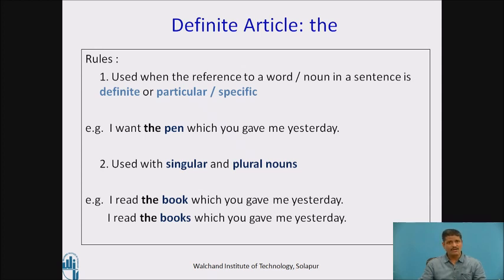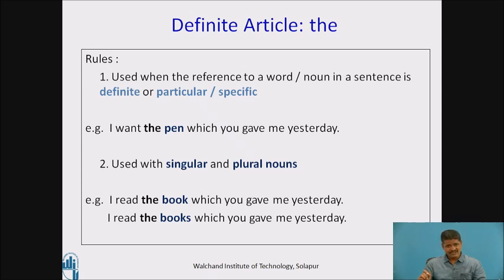Example: 'I want the pen which you gave me yesterday.' This sentence exemplifies the use of the definite article 'the'. There is a definite reference to the noun 'pen', and the which-clause defines it very precisely. The which-clause gives the noun 'pen' a very definite, particular, and specific description, and that is the reason why we use the definite article 'the' here.